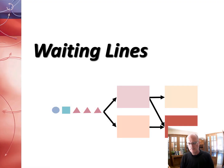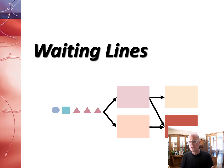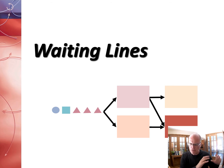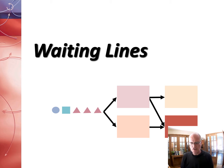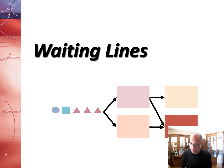Waiting lines or queuing theory is one of my favorite topics in operations. It's an interesting combination of some math and really some strategic elements of how we manage the flow of people in a service landscape. Unlike inventory, which is primarily a product-focused element of operations, waiting lines or queuing theory is much more of a service-focused facilities management element. It's about how we manage the flow of people through our system — thinking about service levels, how long people have to wait, the number of people waiting, and how much space we need for them.